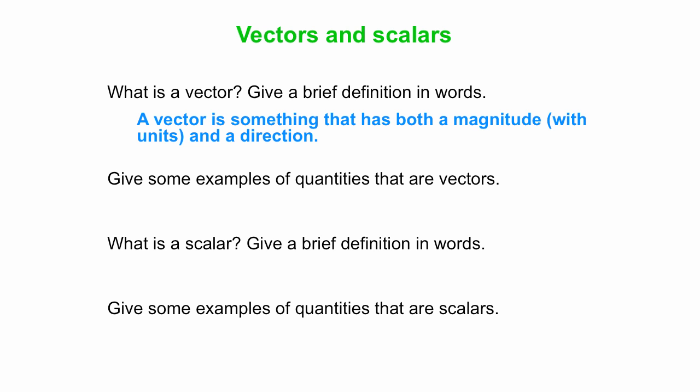So a vector is something that has both a magnitude, of course with units, and a direction. Some examples are the following: displacement, velocity, acceleration, force.